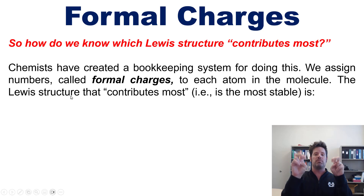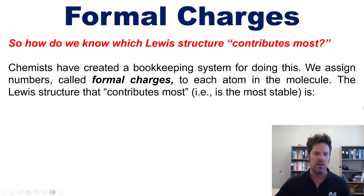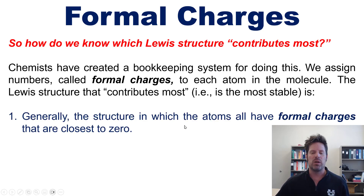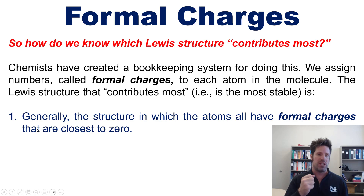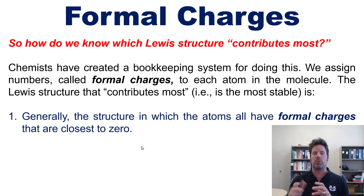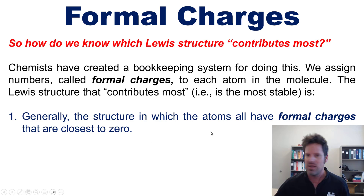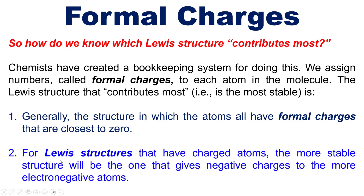We assign numbers called formal charges to each atom in the molecule. The Lewis structure that contributes most — that is, the most stable one — follows these rules. First, the most stable structure will generally be the one in which all of the atoms have formal charges closest to zero. If there's no such structure — in other words, if there is a non-zero formal charge for every single structure — then the most stable structure will be the one that gives a negative charge to the more electronegative atoms.